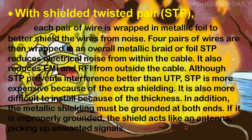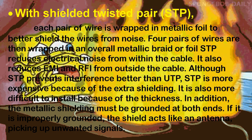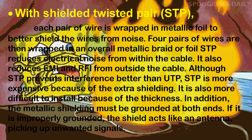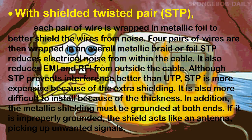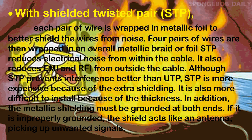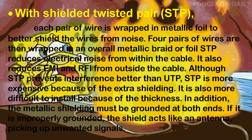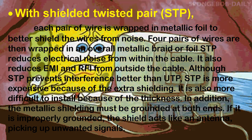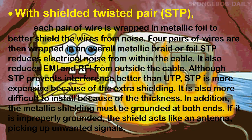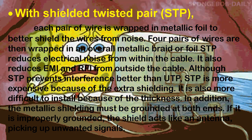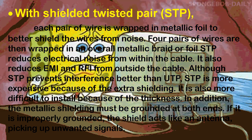Second, we have shielded twisted pair or STP. Each pair of wire is wrapped in metallic foil to better shield the wires from noise. Four pairs of wires are then wrapped in an overall metallic braid of foil. STP reduces electrical noise from within the cable and also reduces EMI or RFI from outside the cable. Although STP prevents interference better than UTP, STP is more expensive because of the extra shielding. It is also more difficult to install because of the thickness. In addition, the metallic shielding must be grounded at both ends. If it is improperly grounded, the shield acts like an antenna, picking up unwanted signals.